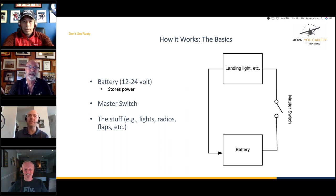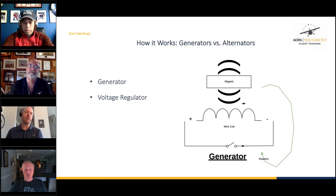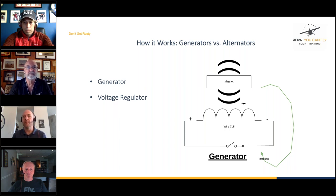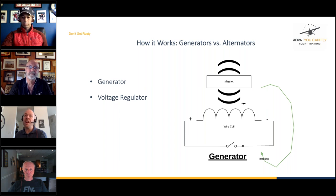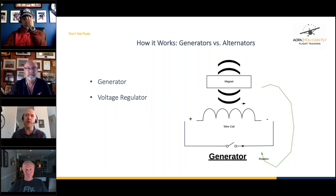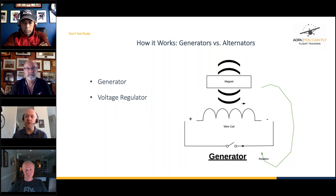Chris: 'Let's go beyond the basics. If we were just running on a battery it would eventually die, so we want generators and alternators to recharge it. Starting with the original charging device — the old school generator — some of you may have flown on older airplanes with one. If you have, you'll know that when you change the RPM, for example pulling it to idle, your landing light could dim. There's a good discussion of this in the articles in the handout.'